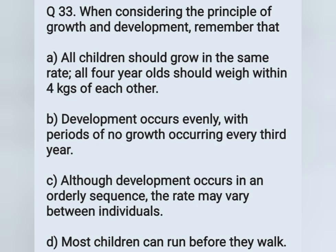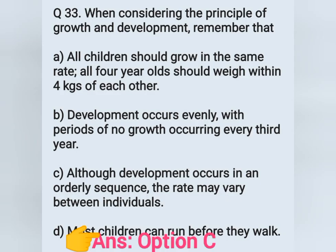Question number 33. When considering the principles of growth and development, remember that — Option A: All children should grow at the same rate. Option B: Development occurs evenly with periods of no growth every third year. Option C: Although development occurs in an orderly sequence, the rate may vary between individuals. Option D: Most children can run before they walk. The correct answer is Option C — development occurs in a sequence but the rate may vary between individuals.